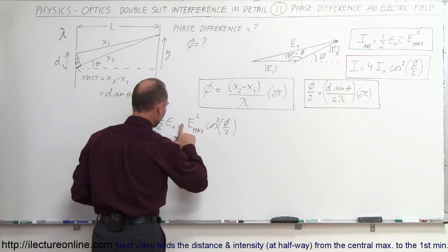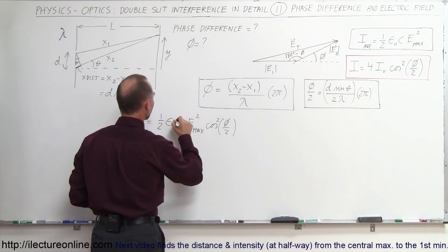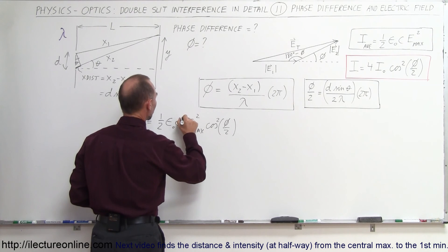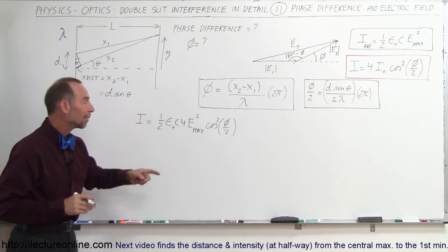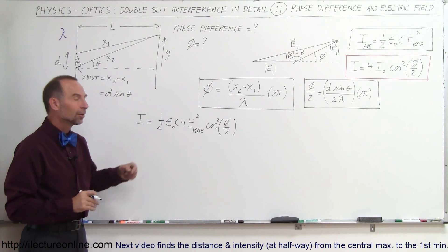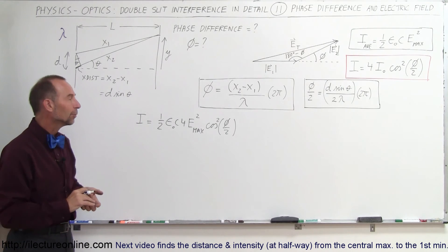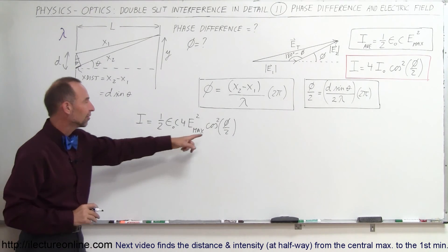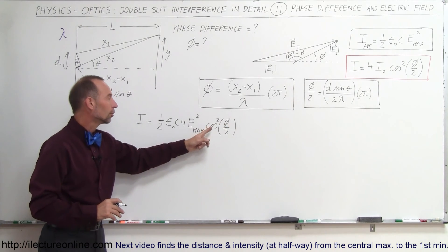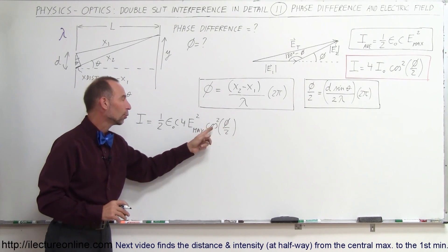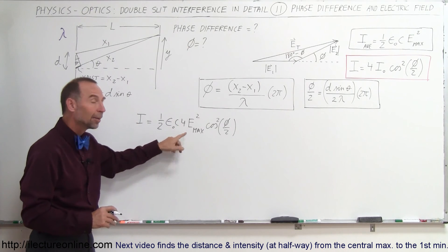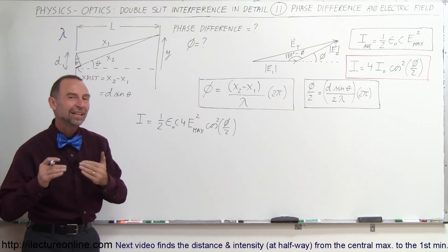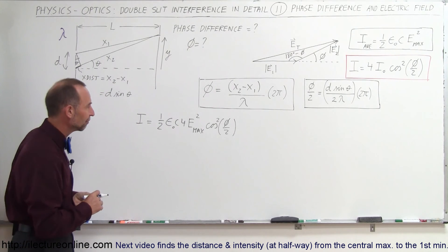One more thing: there is also a factor of 4 times E_max, because when the phase difference equals zero, the cosine of zero is 1, and we find that the intensity is 4 times the intensity of an individual wave.